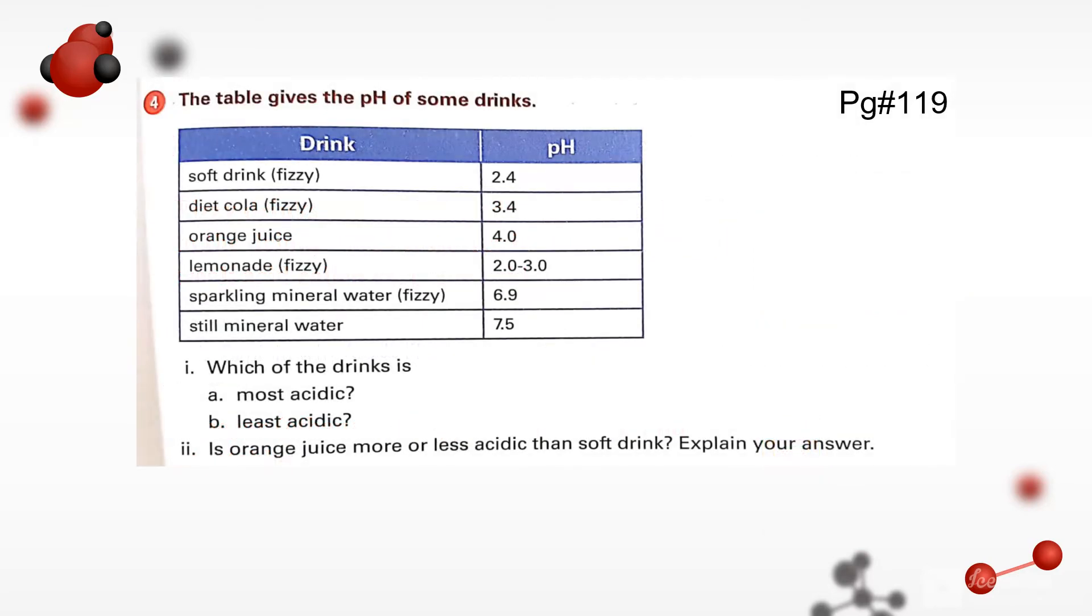The fourth question is: the table gives the pH of some drinks - these are the drinks you can see here: soft drinks, diet cola, orange juices, lemonade, sparkling lemon waters and still mineral waters. We will give the answer of the questions given below. Which of the following drink is most acidic? Lemonade is the most acidic because its pH is the lowest one. And least acidic is the still mineral water because still mineral water has the highest pH number and that is 7.5.